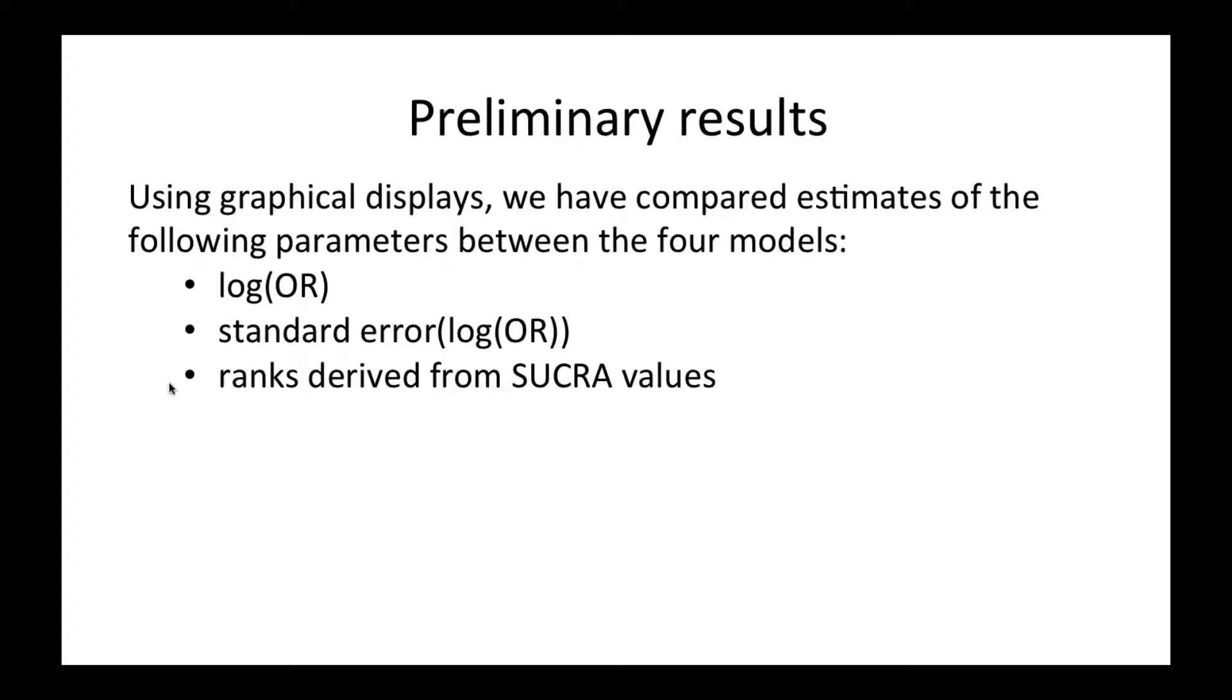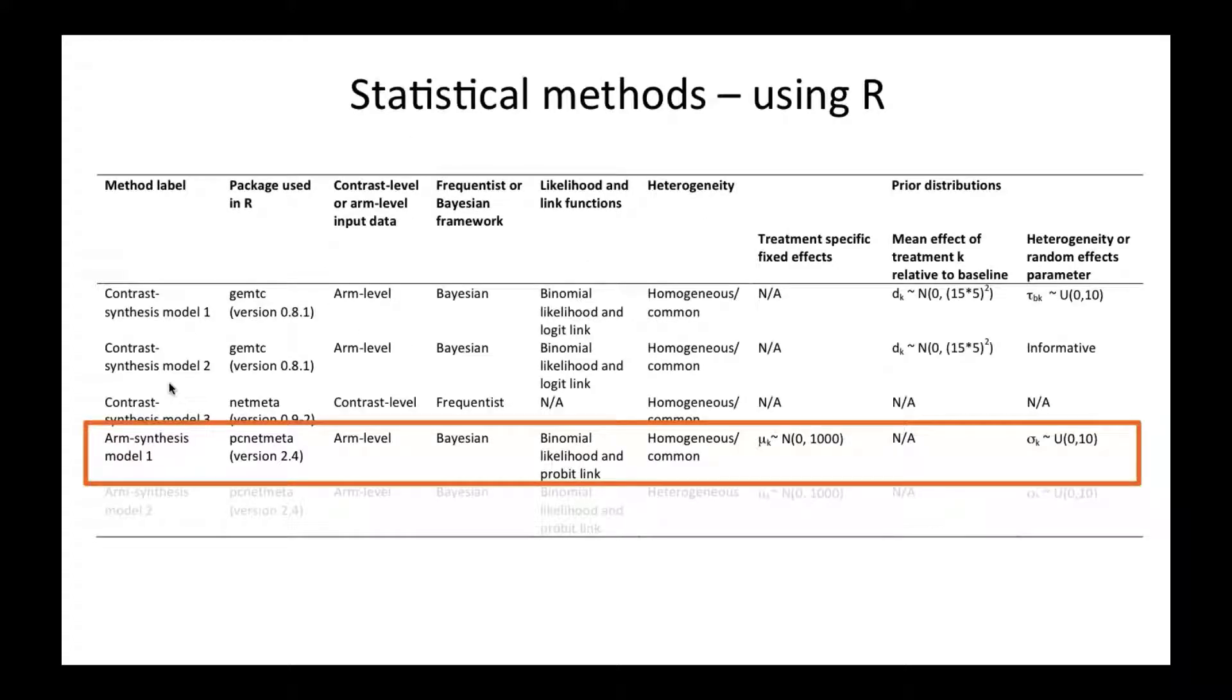All the analyses have been done in R, but our data preparation and graphing have been done in Stata. For the Bayesian methods, we've used three chains with a burn-in of 300,000 followed by 300,000 samples, which have been saved at an interval of 10 from each of the three chains.